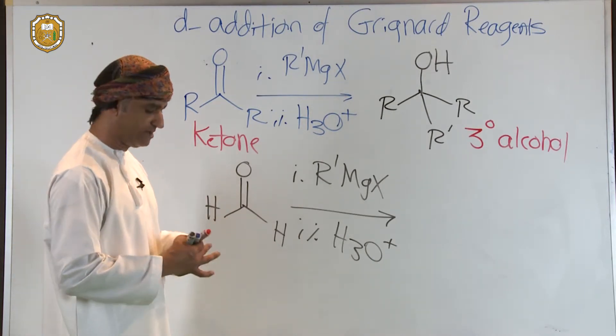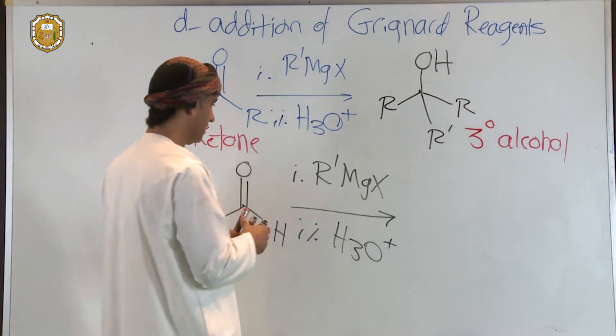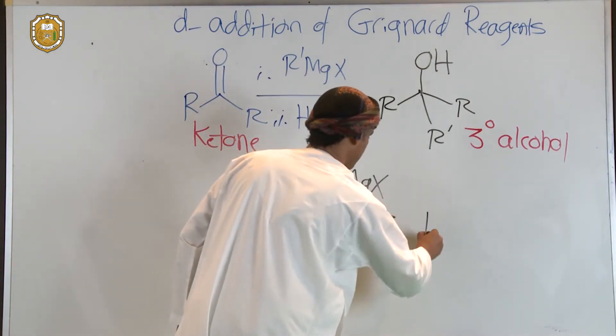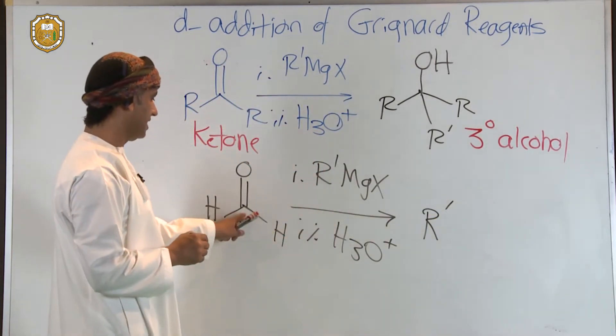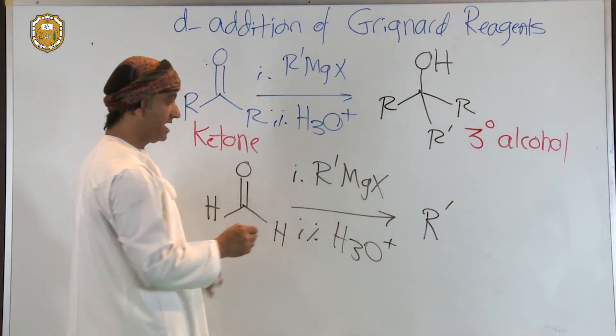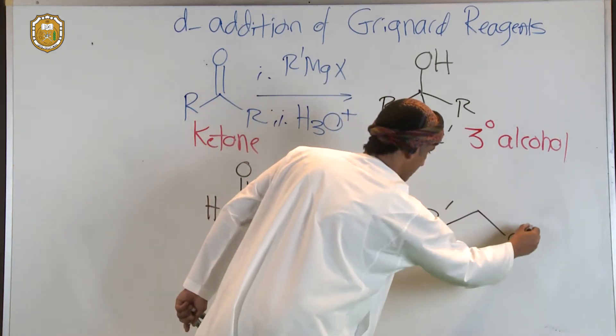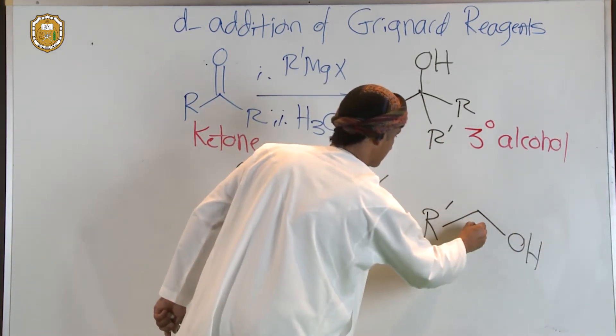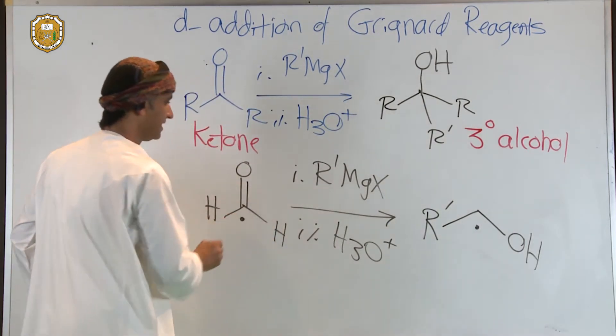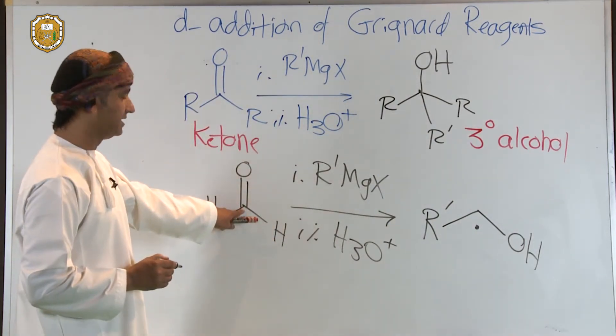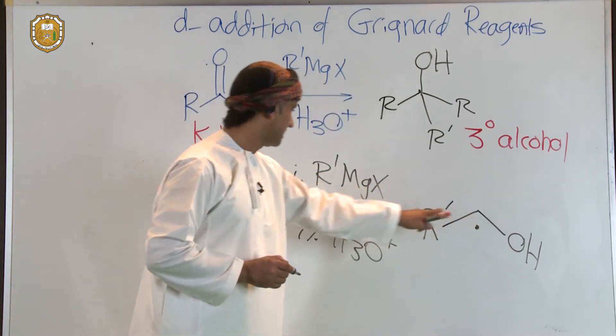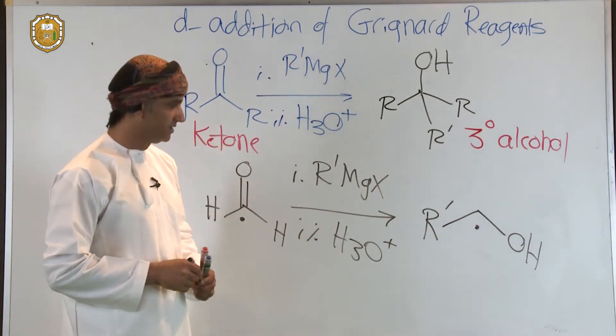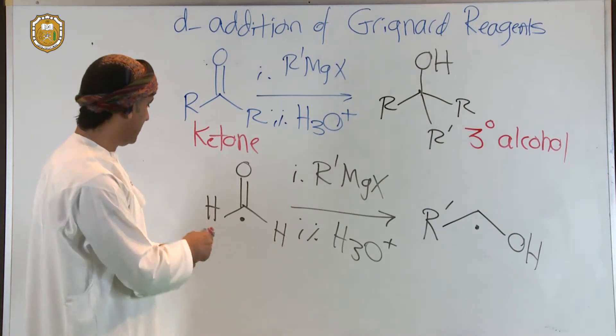So the product is actually a primary alcohol. The product that is produced is R prime coming from the Grignard that will attack that carbon. So this should be bonded to that carbon. Remember that carbon? That one is basically that one. This carbon of the formaldehyde is actually that one which gets attacked by the Grignard reagent.